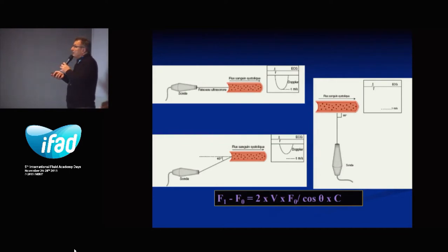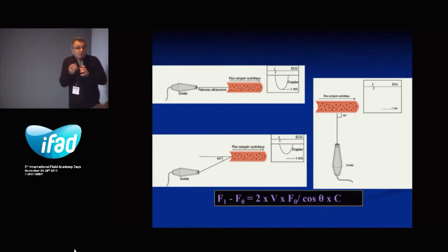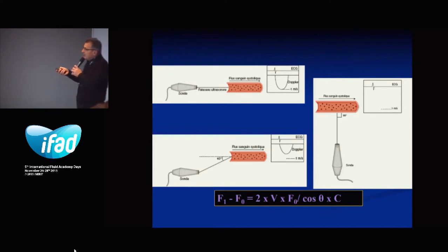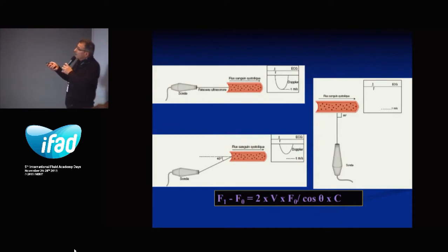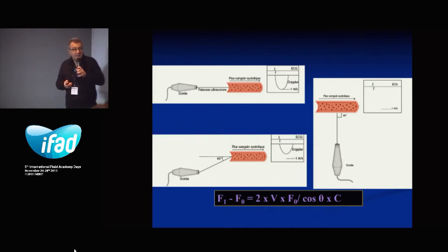If you have an angle of, for example, 20 degrees, you will have an underestimation of the flow velocity. The more the angle increases, the less velocity will be recorded. For example, at zero degrees you measure one meter per second, but at 40 degrees of angle, you record only 60 centimeters per second. That is very important.